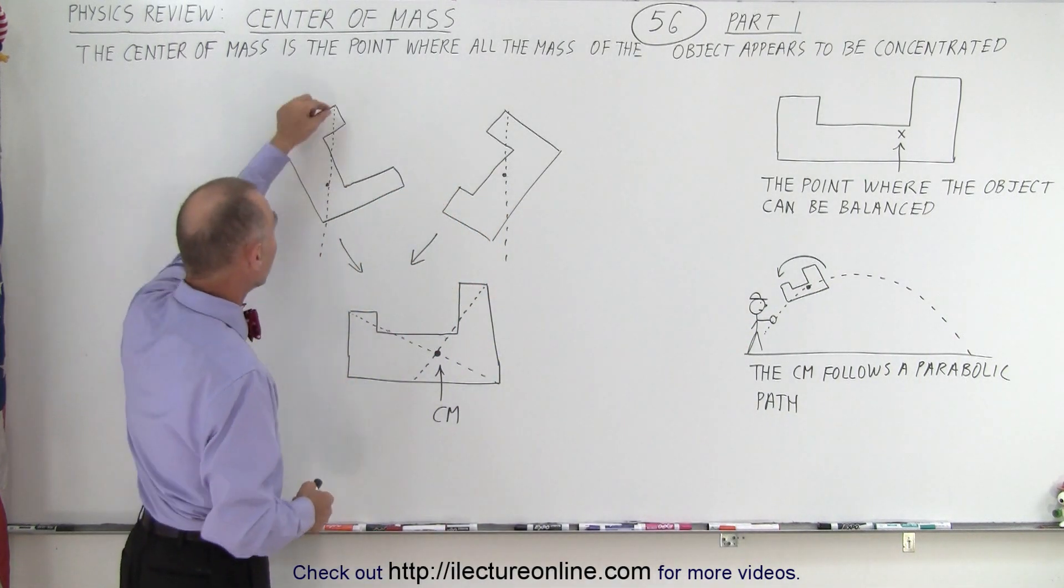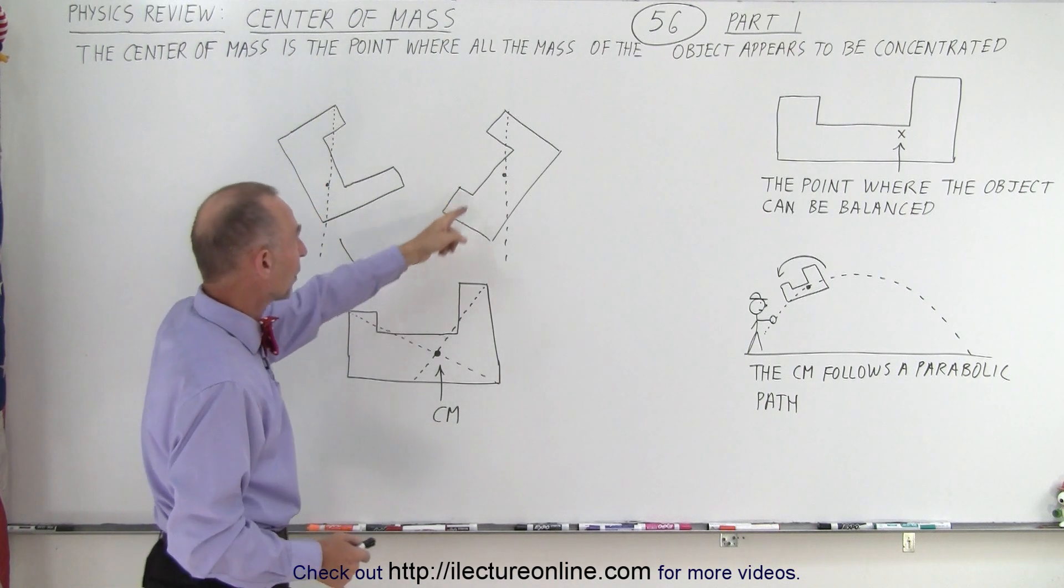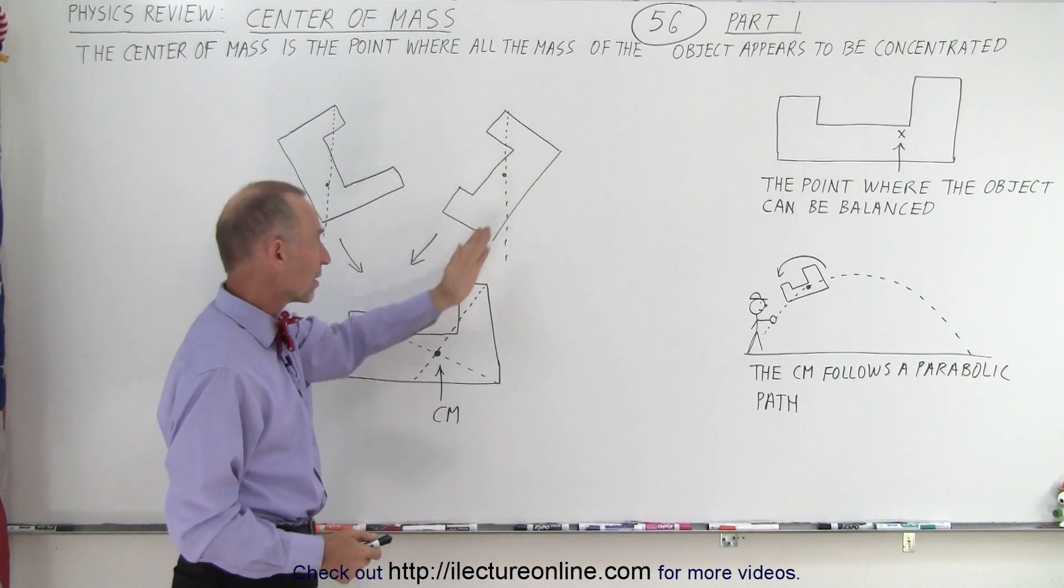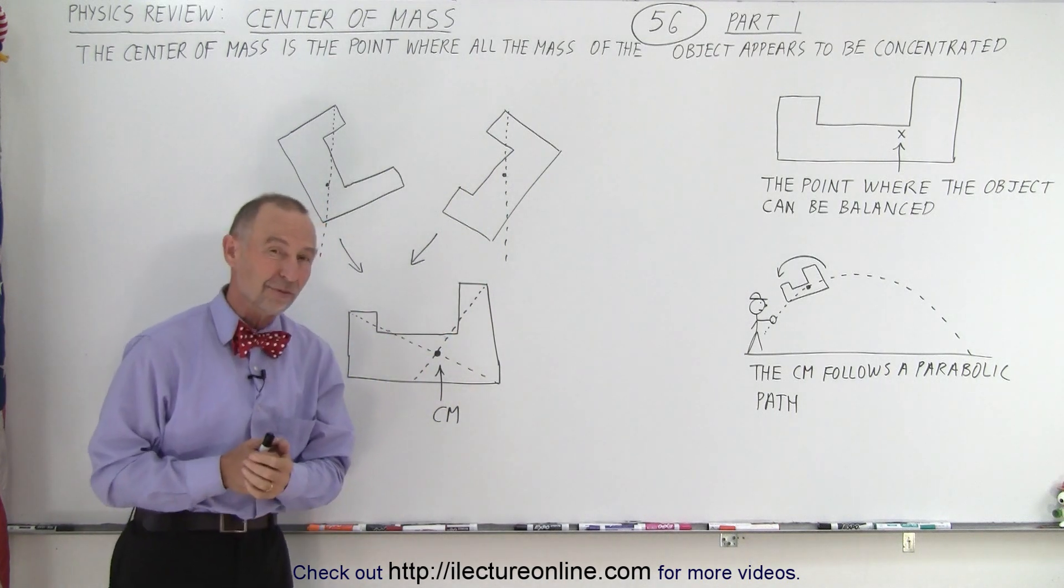And finally, let's say you have an object and you suspend it on one corner and you draw a line straight down, and then you suspend it on another corner, you draw a line straight down, then where the two lines cross, that will be the point of the center of mass.